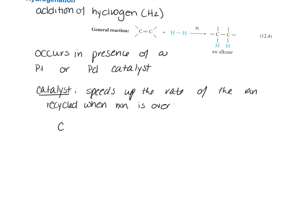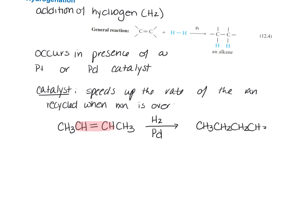Let's look at a specific example. We have a reaction with H2 and a palladium catalyst — reactants are shown above the arrow and the palladium below. We know our carbons aren't going to change, but this double bond is going to turn into a single bond, and a hydrogen is going to add to each carbon. The product then would be CH3CH2CH2CH3.